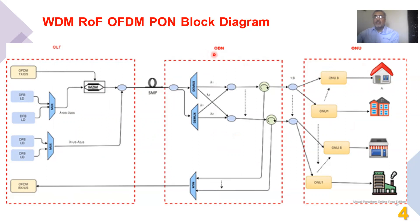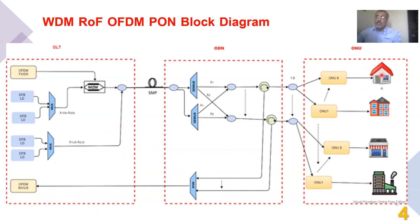The second unit is the optical distribution network. In this unit, we distribute the different wavelengths and direct them into the proper path using circulators, demuxes, and splitters. In the optical network unit, the users receive the downstream signals which are demodulated and detected. Users also modulate their data onto the CW lasers coming from the OLT using the reflective semiconductor optical amplifier.